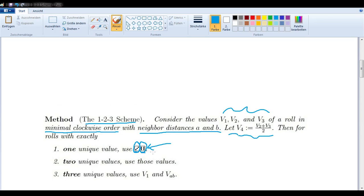If there are exactly two unique values in our roll, then we just use those values. And if we have exactly three unique values in our rolls, then we use value one and value V_AB. And we'll explain now what that means and how we get that.